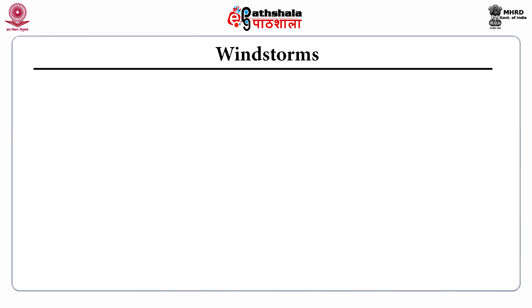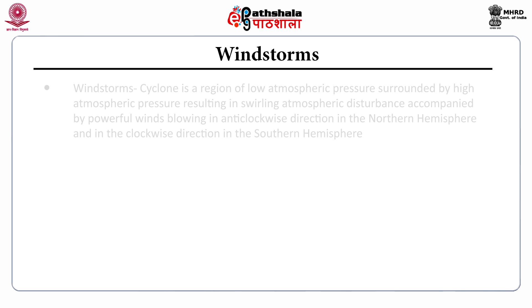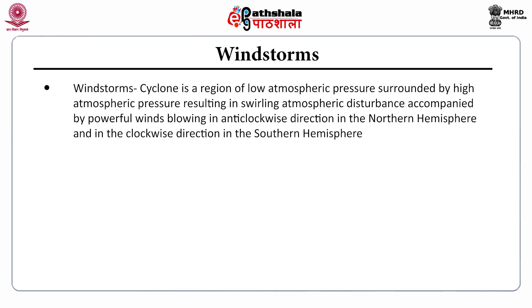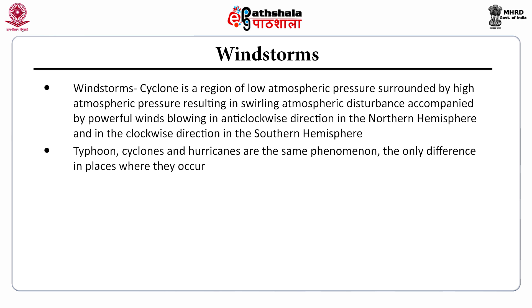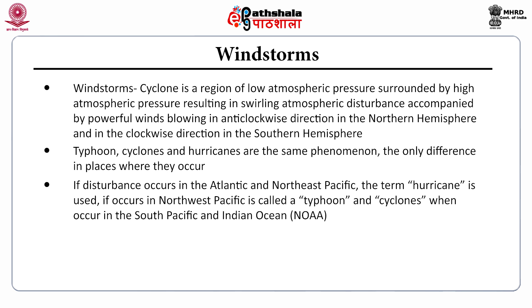What are windstorms and what are their consequences? A windstorm cyclone is a region of low atmospheric pressure surrounded by high atmospheric pressure, resulting in a swirling atmospheric disturbance accompanied by powerful winds blowing in an anti-clockwise direction in the northern hemisphere and in the clockwise direction in the southern hemisphere. Typhoons, cyclones and hurricanes are the same phenomenon, the only difference being the places where they occur. If it occurs in the Atlantic and North East Pacific, the term hurricane is used; if in the North West Pacific, it is called a typhoon; and cyclones occur in the South Pacific and Indian Ocean.